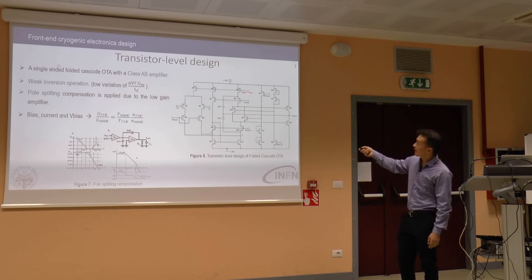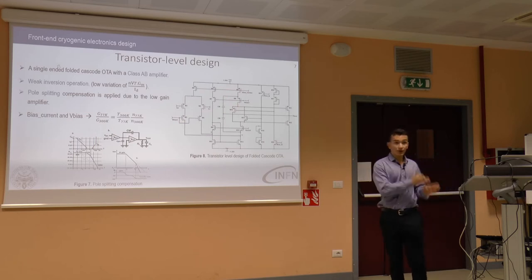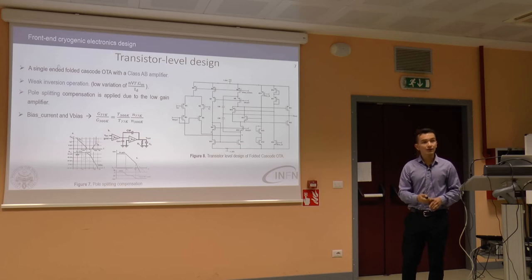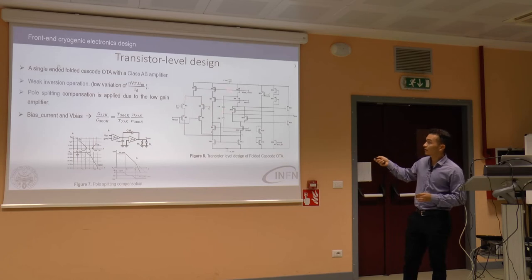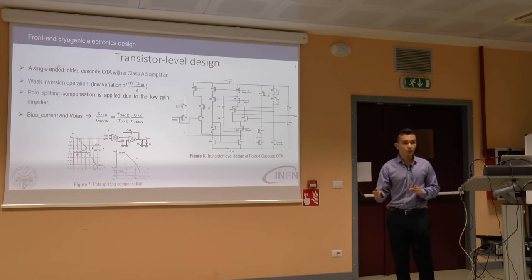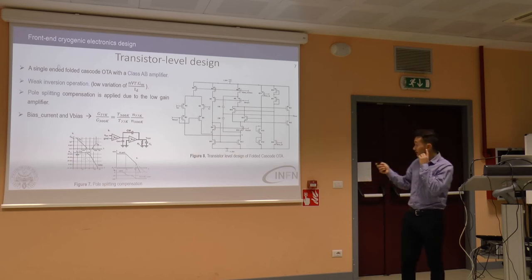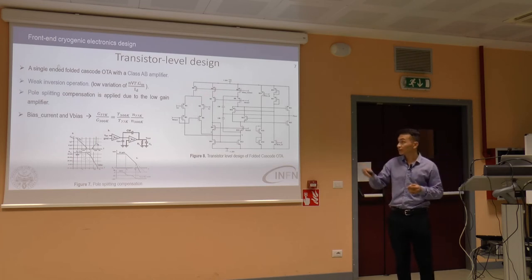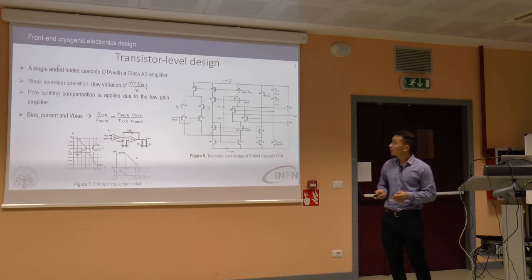We have an external bias, which is really important when changing operation between 300 Kelvin and 77 Kelvin. As noted, the transconductance increases more than twice at 77 Kelvin. This increment in the input transistors modifies the poles and gain-bandwidth, putting the circuit in an unstable condition. The bias current is used to reduce the current flowing through the transistors at 77 Kelvin.